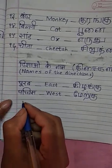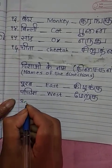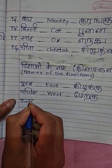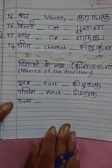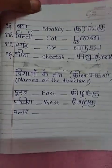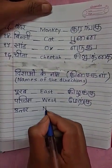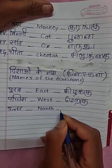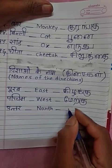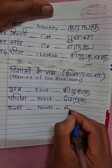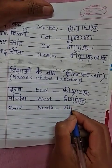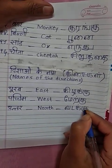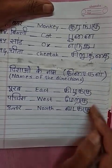Then comes north. In Hindi it is written as Uttar. Uttar means north. In Tamil, north is Vadakku — Va, da, ikku — Vadakku. The same 'ku' ending will come for all four directions.